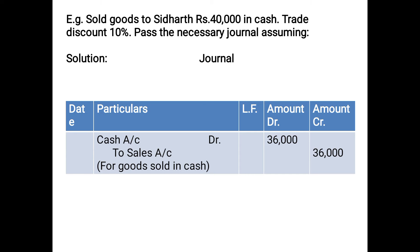Next example: sold goods to Siddharth for Rs. 40,000 in cash, trade discount 10%. Only trade discount is given — no cash discount. 10% of Rs. 40,000 = Rs. 4,000. Net sale value = Rs. 36,000. Trade discount is not shown separately. Entry: Cash Account debited Rs. 36,000 to Sales Account Rs. 36,000. Narration: for goods sold in cash.